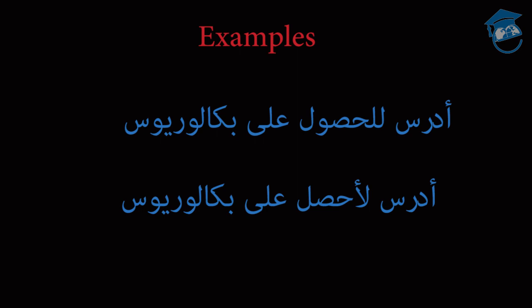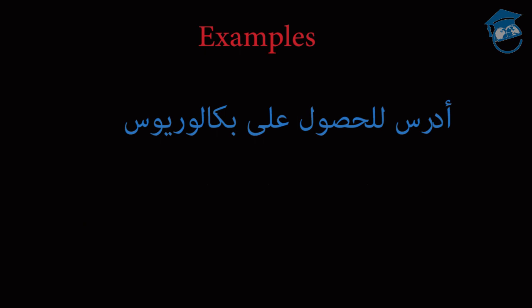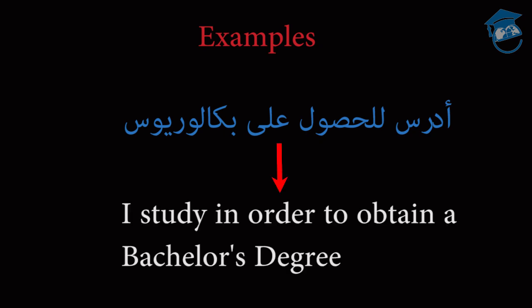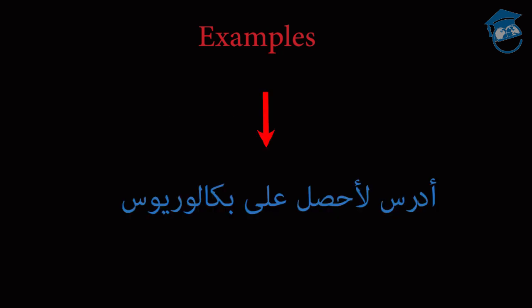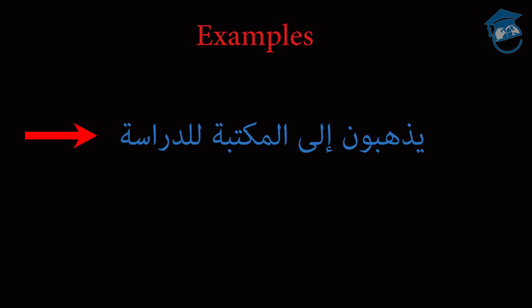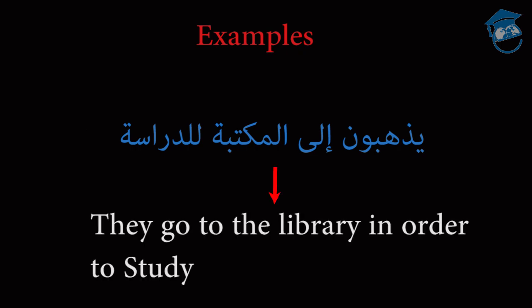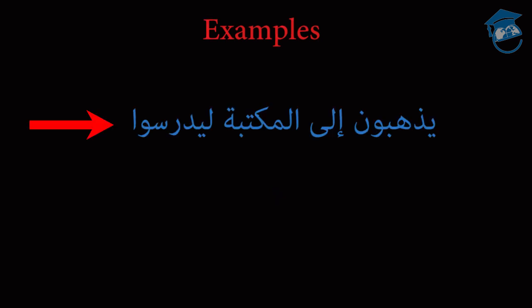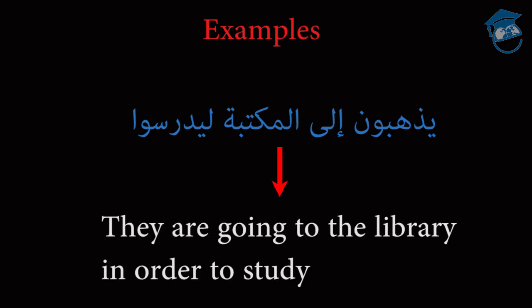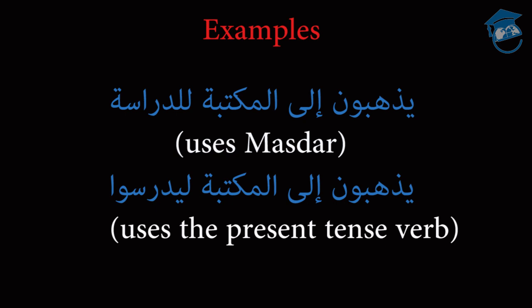Look at the following pairs. In the first sentence you're using the mazdar, and in the second sentence you're saying the same thing but using the present tense verb instead. In the second set of examples: They go to the library in order to study — using the mazdar. In the second example: They are going to the library in order to study — using the fa'al al-mudara. Both have the same meaning.